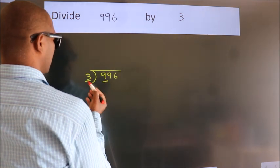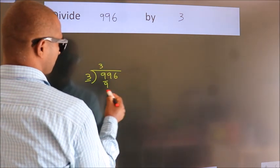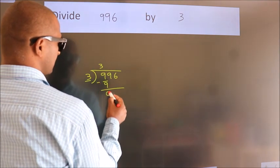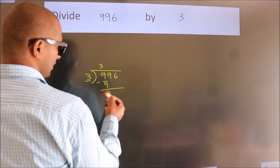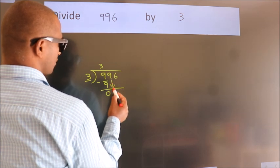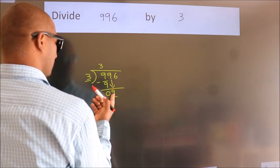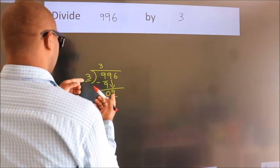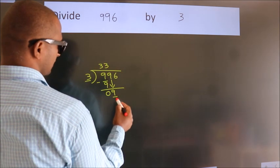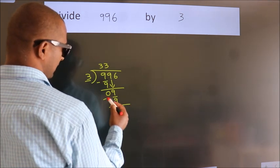When do we get 9 in the 3 times table? 3 threes are 9. Now we subtract — we get 0. After this, bring down the beside number, so 9 comes down. When do we get 9 in the 3 times table? 3 threes are 9. Now we subtract — we get 0.